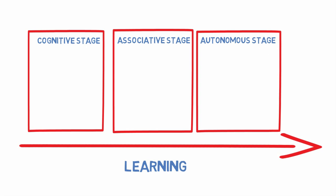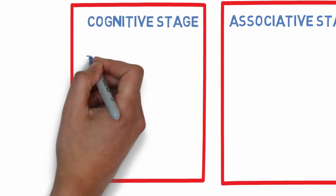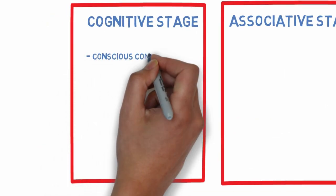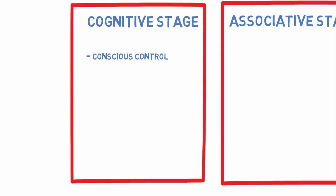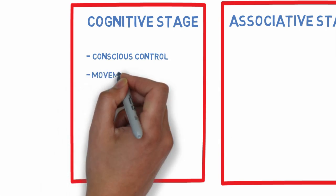Fitts and Posner's stage theory proposes that beginners in the cognitive stage rely on working memory and need to consciously attend to the movement, breaking it down into steps during execution.